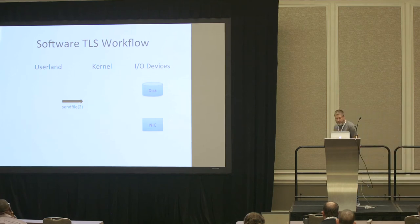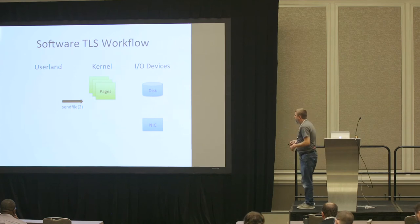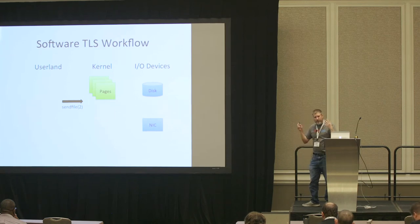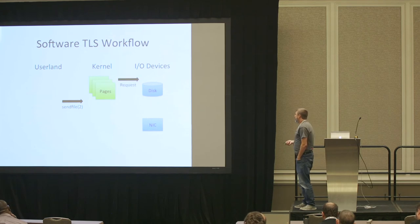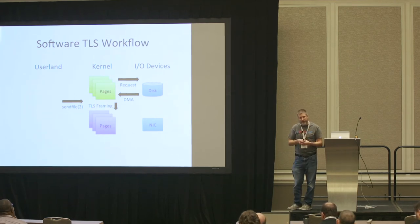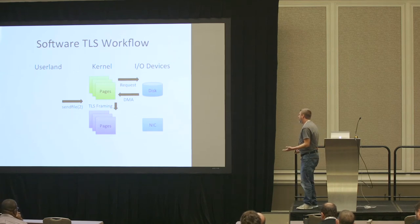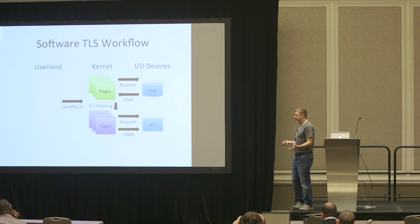The software TLS workflow with sendfile: we call sendfile, allocate pages or find them in the buffer cache, get data off the disk, then do the TLS framing step inside the kernel — modifying the pages from plain data to encrypted TLS frames. Once that's ready, we send it down into TCP and ultimately to the NIC. That's the high-level workflow.